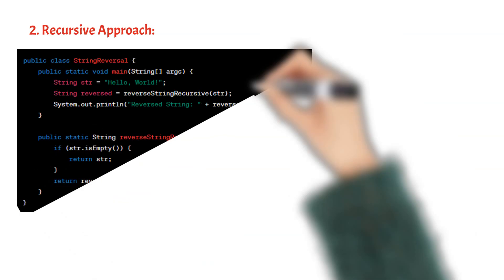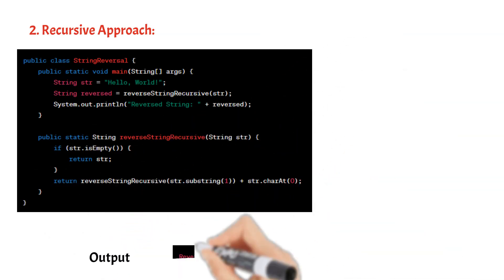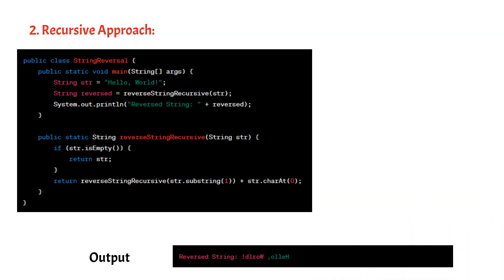In this example, the reverseString recursive method uses a recursive approach to reverse the string. It checks if the string is empty as the base case, in which case it returns the empty string. Otherwise, it recursively calls itself on a substring of the original string excluding the first character, and concatenates the first character at the end. The recursion continues until the string becomes empty, and the reversed string is built from the recursive calls.